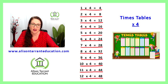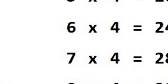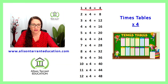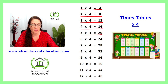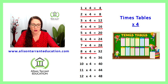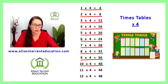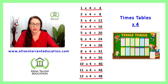Excellent. Let's practice that again. 1 times 4 is 4, 2 times 4 is 8, 3 times 4 is 12, 4 times 4 is 16, 5 times 4 is 20, 6 times 4 is 24, 7 times 4 is 28, 8 times 4 is 32, 9 times 4 is 36, 10 times 4 is 40, 11 times 4 is 44, 12 times 4 is 48.